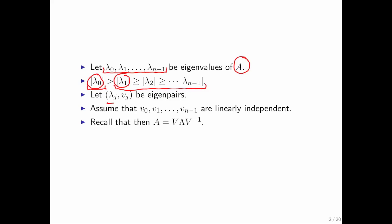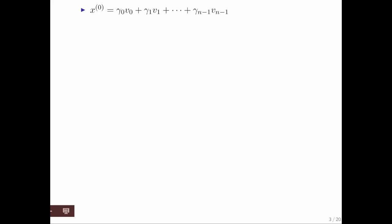We assume that we have n eigenpairs, and we make a substantial assumption: that the eigenvectors are all linearly independent. Just like when we were illustrating how to predict the weather, we start with an initial vector x at time 0. Because vectors v0 through v_{n-1} are linearly independent and there are n of them, any vector in R^n can be written as a linear combination of them.